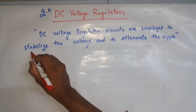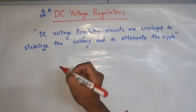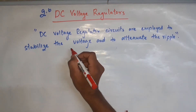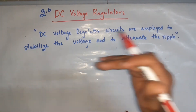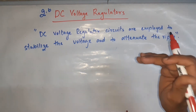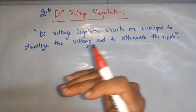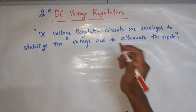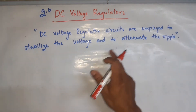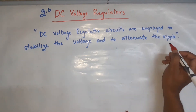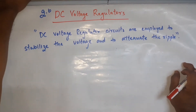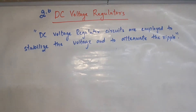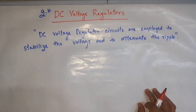The regulator will maintain the voltage at a particular value. Though there may be some variation at the input side, at the output side the job of the regulator is to maintain that particular value even if there are variations at the input. It will also attenuate the ripple, which I will show you with a graph.